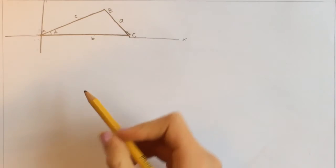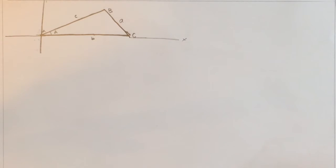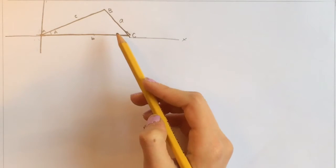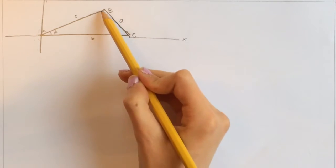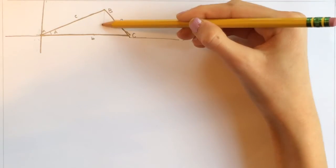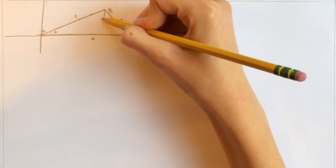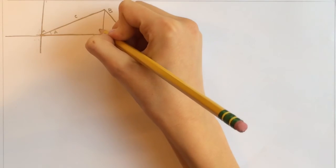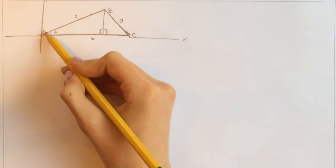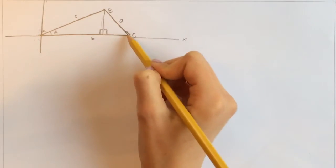Now that we have our triangle on the coordinate system, we can drop a line right through angle B, down through the middle of the triangle, creating two different right triangles — this right triangle and this one right here, and this line is perpendicular.